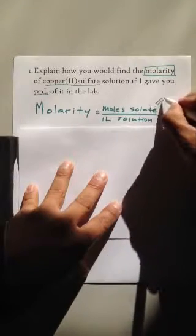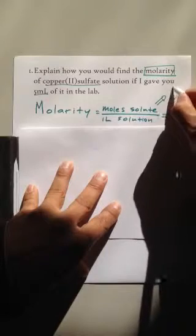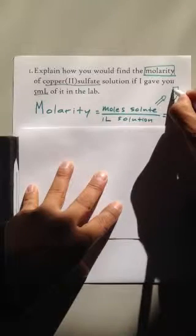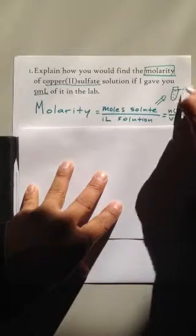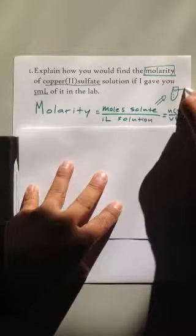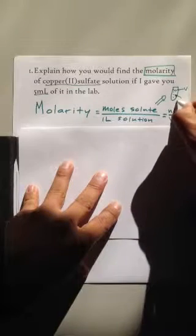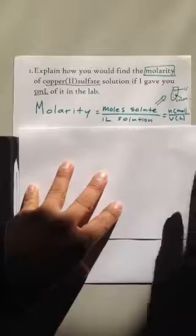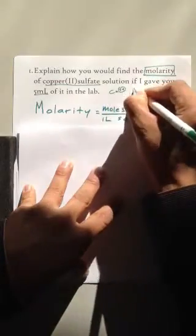Solute is basically the stuff, and liters of solution is the total volume. So here is the volume, and here is your solute. So if I gave you 5 milliliters of copper 2 sulfate, before we go any further: copper 2 plus, look at your periodic table here, sulfate is SO4 2 minus.